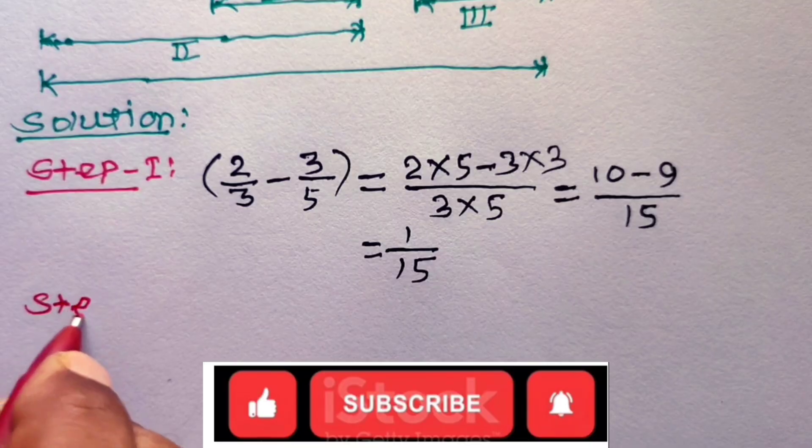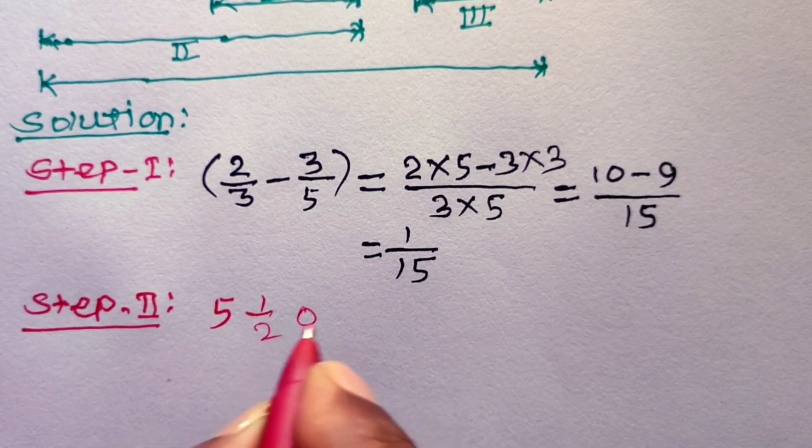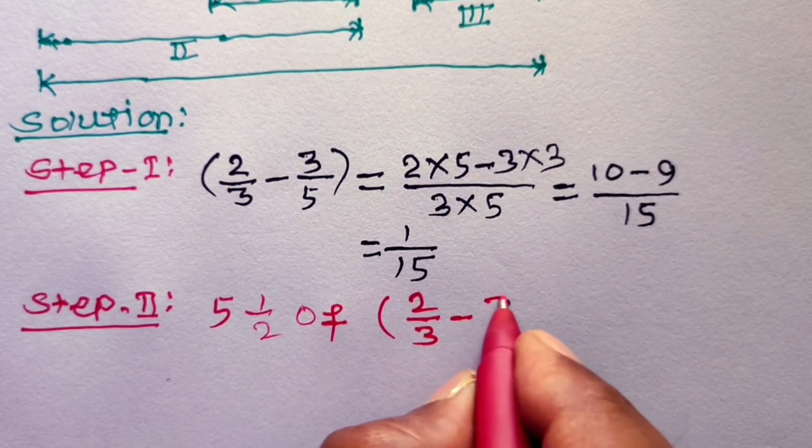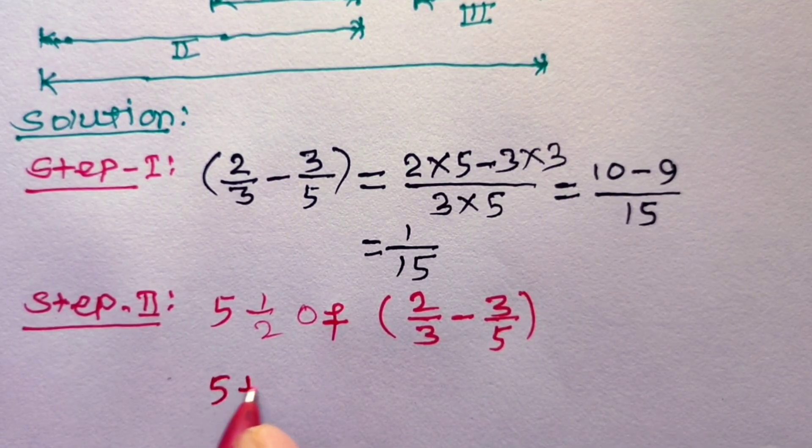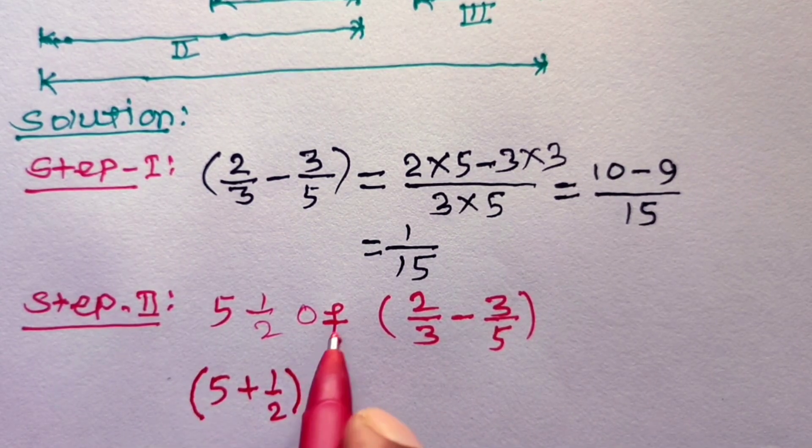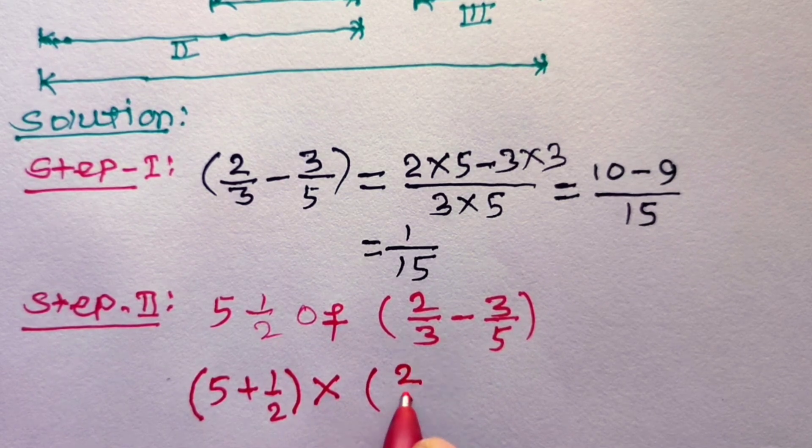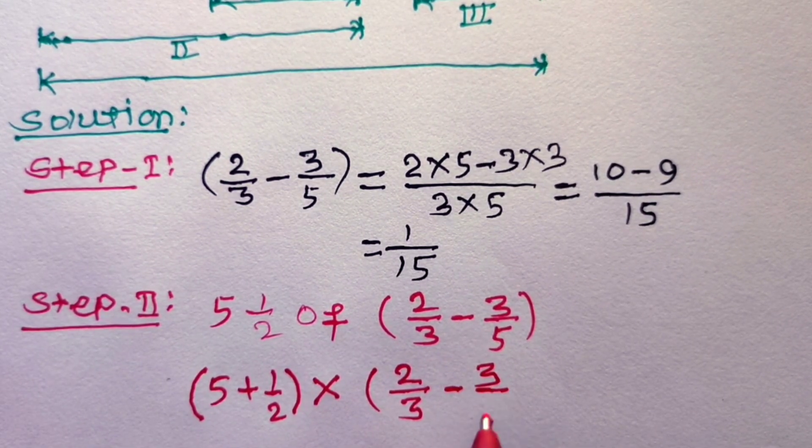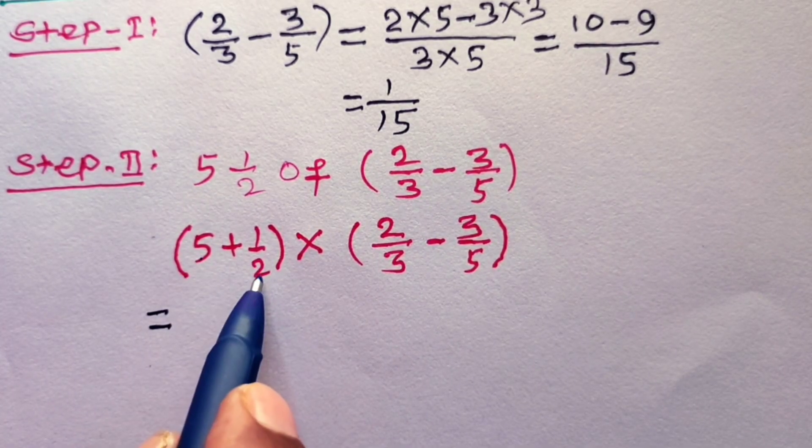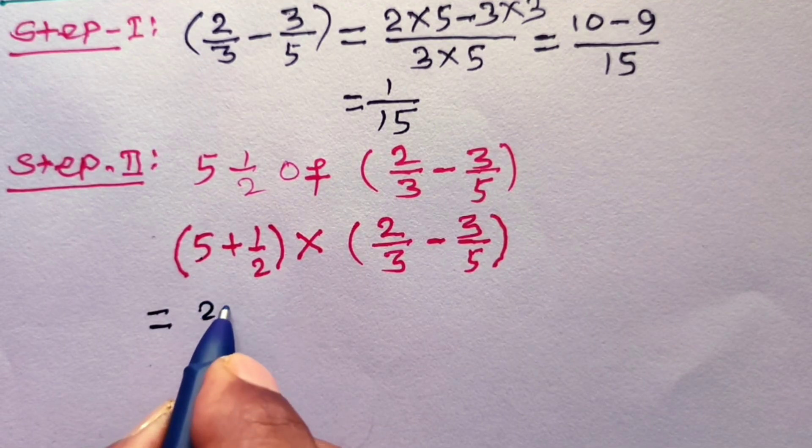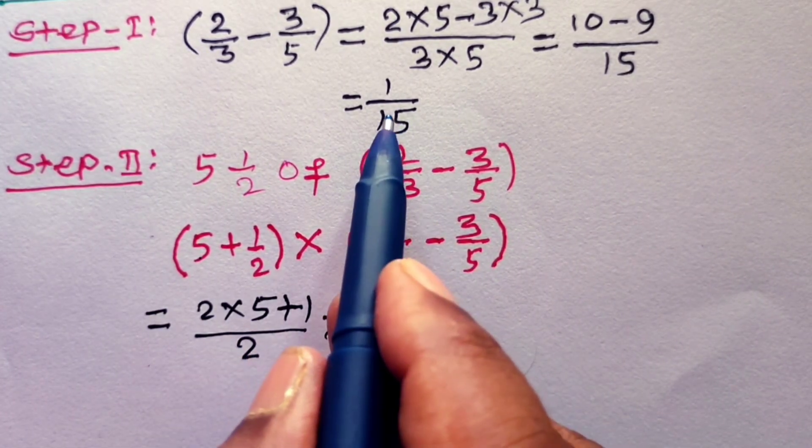Now step number 2, that is 5 and half of (2/3 - 3/5). This mixed number we can write as (5 + 1/2) in a bracket, and replace this of by symbolic notation of multiplication. Then put this bracket 2/3 minus 3/5. This is equal to (2 into 5 plus 1) over 2, multiplied by this bracket, but this bracket is equal to 1/15.